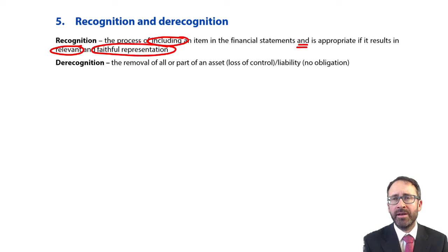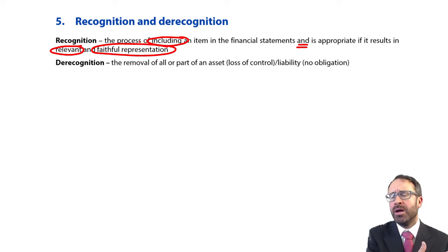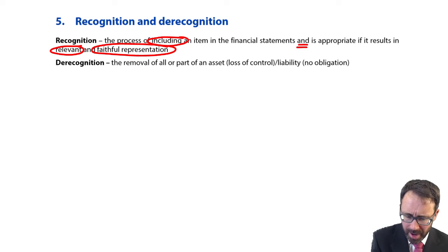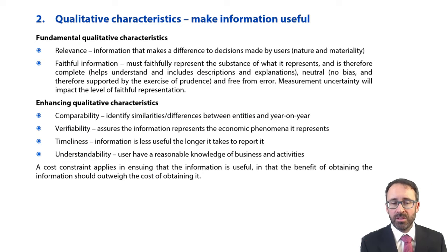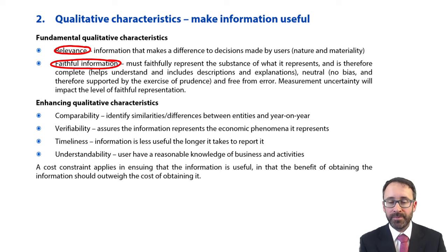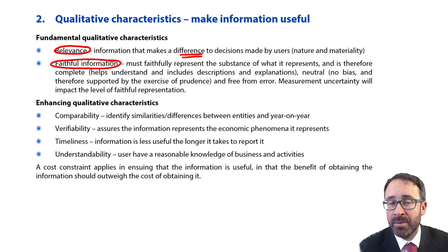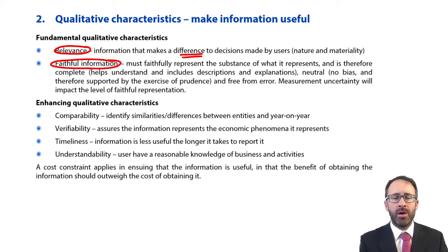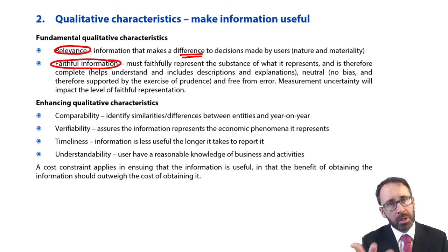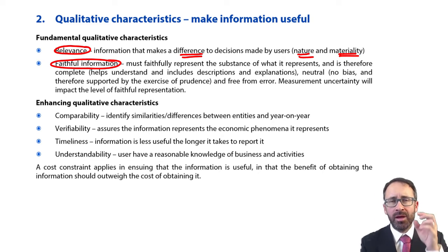The definition is totally different from what it used to be. It used to be a probable inflow of economic benefits, measured reliably. If you look at it now, there's no probability criteria — that's been stripped out. And there's no measurement criterion either. So let's look at where measurement fits in. If you consider relevance and faithful information: we're going to recognise it if it makes a difference to the decisions made by the users. If it doesn't, we cannot put it in. And more importantly, it's materiality — it's size — that starts to bring in the measurement aspect.